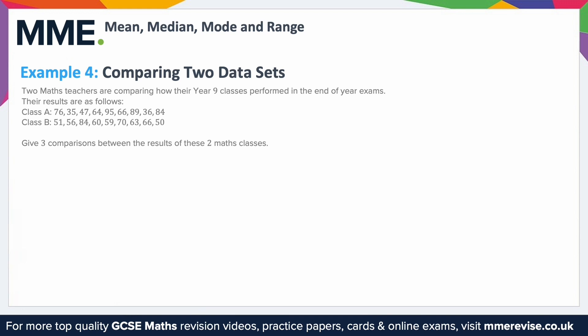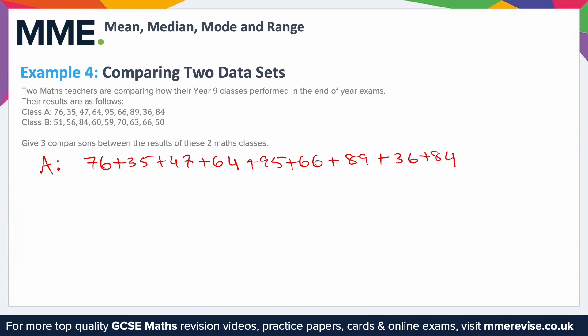Example 4: comparing two data sets. Two maths teachers are comparing how their year 9 classes performed in end-of-year exams — we have a list for class A and a list for class B. The question asks for three comparisons. Starting with the mean: for class A, we sum all scores (76+35+47+64+95+66+89+36+84) and divide by 9, giving 65.7 recurring — approximately 65.8 to one decimal place. For class B, summing all scores and dividing by 9 gives 62.1 recurring. So class A has a higher mean and therefore potentially performs better on average.